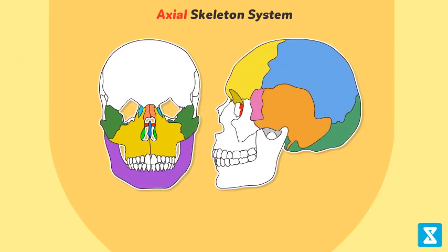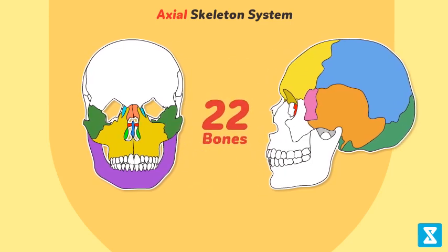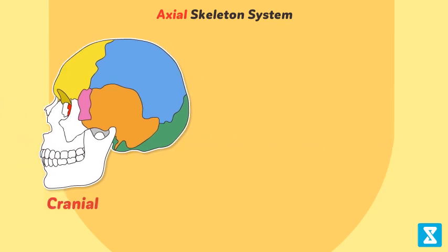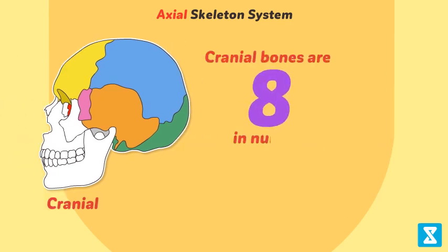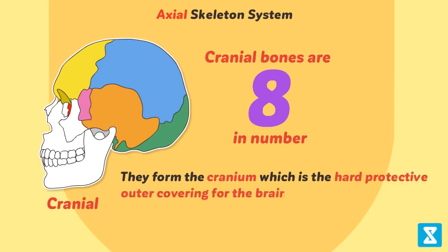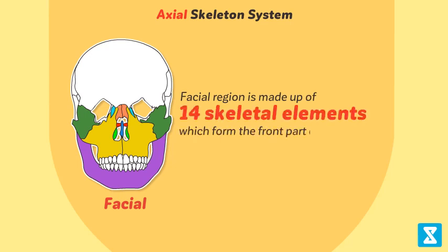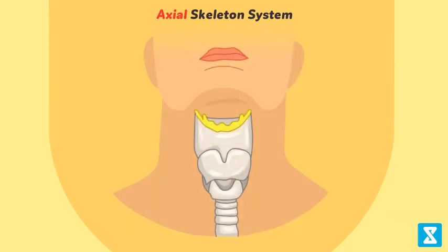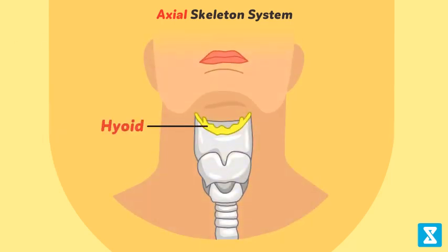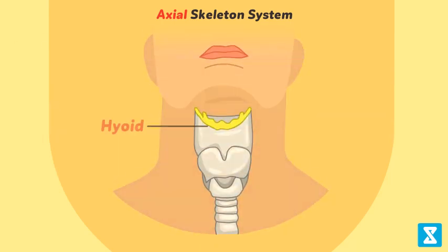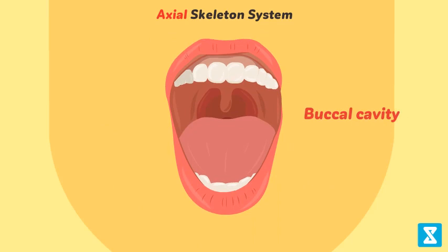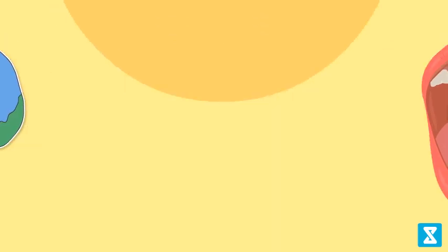The skull is made up of two sets of 22 bones, classified into cranial and facial bones. Cranial bones are eight in number and form the cranium, which is the hard protective outer covering for the brain. The facial region is made up of 14 skeletal elements forming the front part of the skull. A single U-shaped bone called the hyoid is present at the base of the buccal cavity and is also included in the skull.